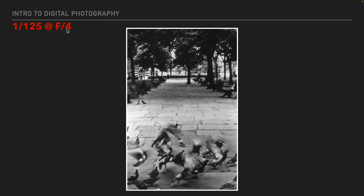If we change the aperture to F4, we've stopped down two stops from F2 to F2.8 to F4 — that's two stops, or one-quarter the amount of light, which means I need to let the light in for four times as long. So I went from 1/500th to 1/250th to 1/125th — that's four times as long the light's coming in. Now at F4, more of the background is starting to come into focus and at 1/125th of a second, motion is starting to get blurred. I can still tell they're pigeons because some are standing still, but I definitely can't see the feathers on their wings — the motion of the wings is starting to blur.